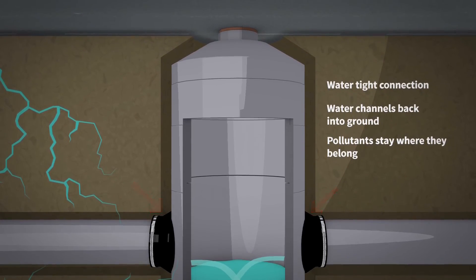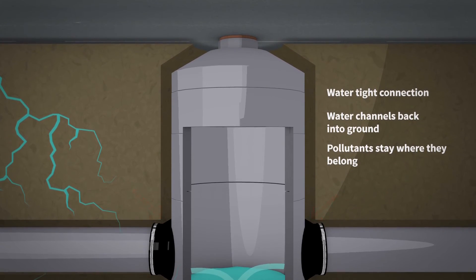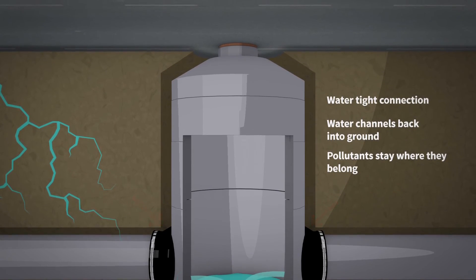The flexible connector not only keeps the groundwater out, but keeps the system water in. Pollutants are kept in the system where they belong.